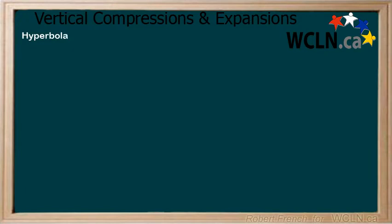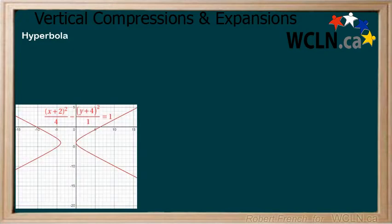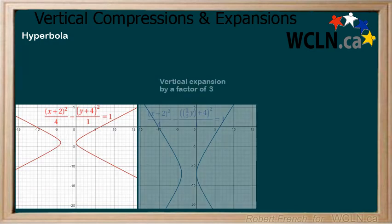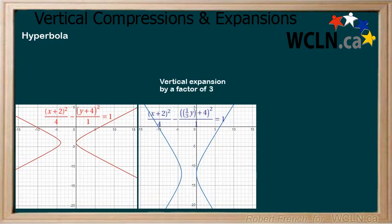Third, we will look at a hyperbola. Here is both the equation and graph of a hyperbola. Now apply a vertical expansion by a factor of 3. To do this, we multiply y by 1 over 3. We can see how the graph of the hyperbola changes as well.